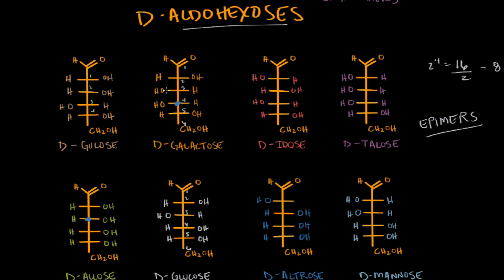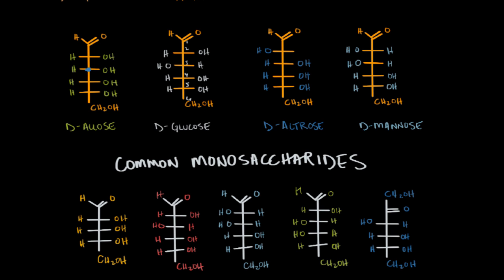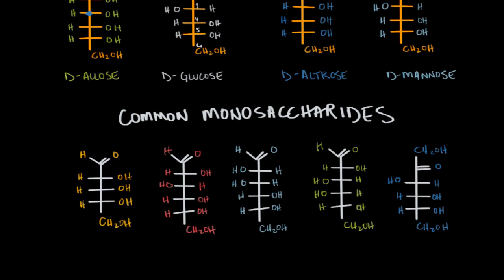The last thing I want to cover is the common names for the five most commonly seen monosaccharides. The first one is ribose — D-ribose. It's an aldopentose: it has an aldehyde and five carbons. All of the hydroxyl substituents are on the right side, so I remember that ribose is 'all right.' The next one is D-glucose, which is an aldohexose.